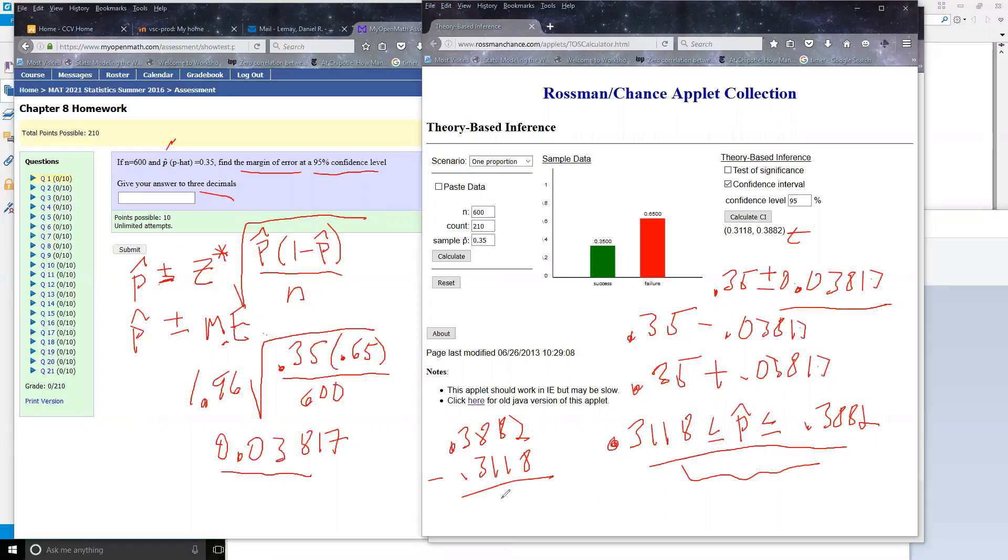I guess I can do that. Let's see here. So 0.3882 minus 0.3118. When I did that on my calculator, I got 0.0764.